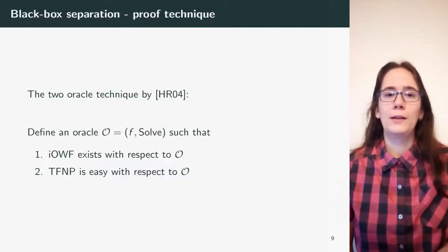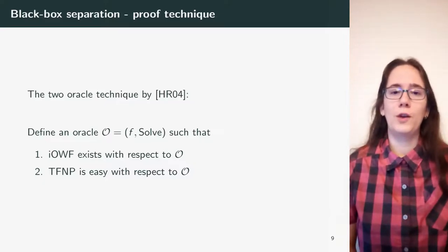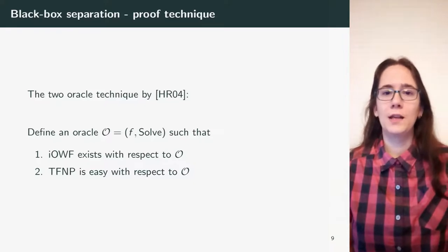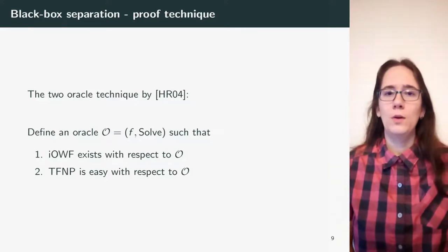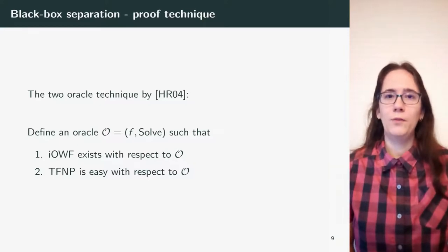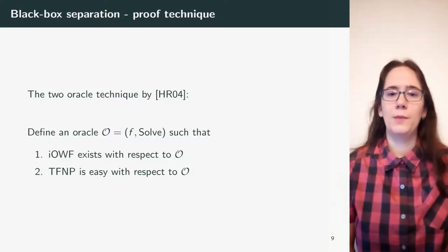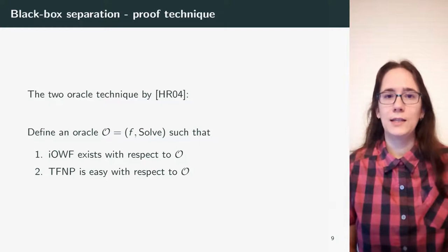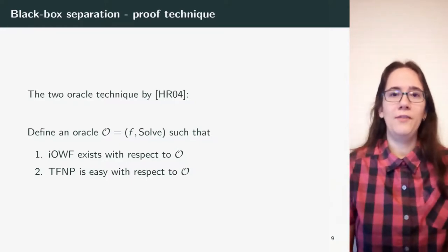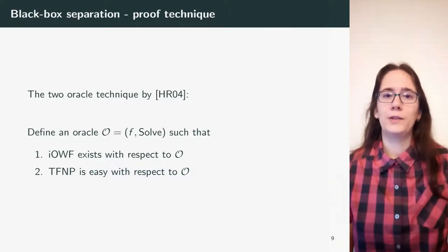How do we prove that there is no black-box construction? We use a proof technique for black-box separation called the two-oracle technique, introduced by Hsiao and Reyzin in 2004. In this technique, you define an oracle O consisting of two oracles: F, which is an implementation of an injective one-way function, and solve, which is a solver for the TFNP problem. You should prove that injective one-way functions exist with respect to this oracle O, but TFNP is easy with respect to O. We slightly differ from this technique, and I will mention it later.